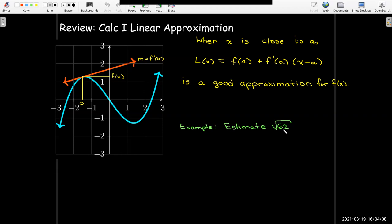We said let's estimate √62. Our function is f(x) = √x. Now √62 is close to √64, which I know to be 8. And the derivative f'(x) would be 1/(2√x). So f'(a) at my number a would be 1/(2√64), which is just 1/16.